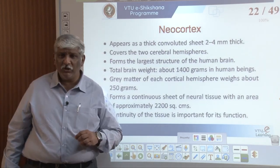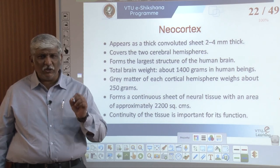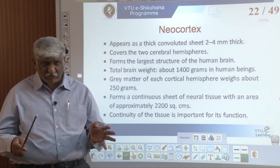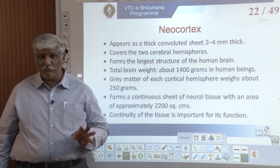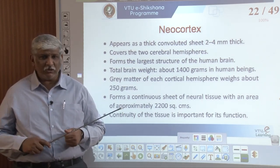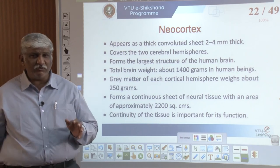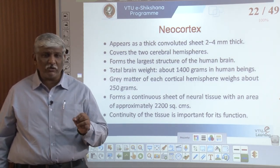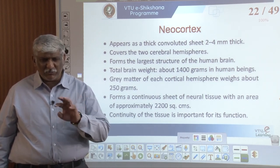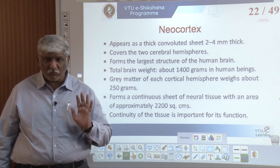The neocortex is where neurons reside — a thick convoluted sheet of 2 to 4 mm thickness covering the two cerebral hemispheres, forming the largest structure of the human brain. Total brain weight is around 1400 grams; the grey matter of the cortical hemisphere weighs about 250 grams and forms a continuous sheet of neural tissue with an area of approximately 2200 square centimeters. Continuity of this tissue is important for its function as a conducting layer passing messages and information.